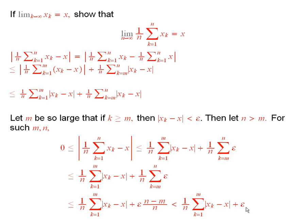And epsilon was arbitrary. So, that shows that this limit is equal to x because it shows that if you make n sufficiently large, the difference between this one and this one can be made as small as desired.